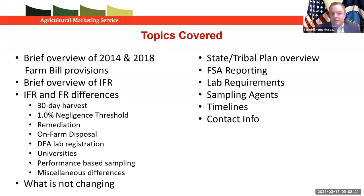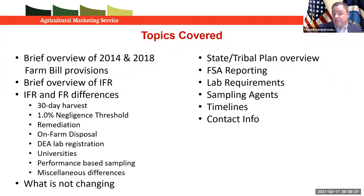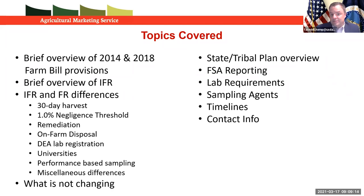The topics we are going to cover during the webinar are as follows: a brief overview of the 2014 and 2018 Farm Bills; the interim final rule and the fundamental differences between it and the final rule; what is not changing from the interim final rule; requirements for state and tribal hemp production plans; FSA reporting; lab requirements; sampling agents; timelines moving forward; and contact information.